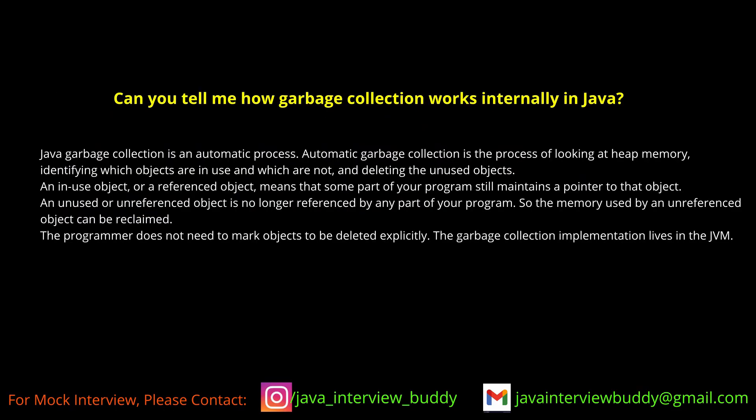How does garbage collection work internally in Java? Garbage collection is part of JVM memory management. It looks for dangling references — objects no longer pointed to. When a method call finishes, the garbage collector tries to free memory occupied by local variables. It continuously looks for objects not in use and frees that memory. However, we cannot force or assure exactly when garbage collection will run, even by calling a specific method.